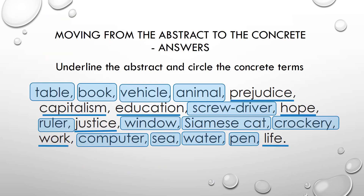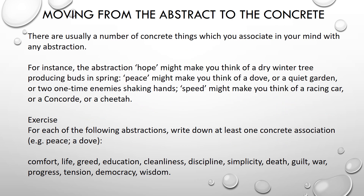Pause the video to compare your answers with the ones below. There are usually a number of concrete things which you associate in your mind with any abstraction. For instance, the abstraction hope might make you think of a dry winter tree producing buds in spring. Peace might make you think of a dove, or a quiet garden, or two one-time enemies shaking hands. Speed might make you think of a racing car, or a Concord, or a cheetah.